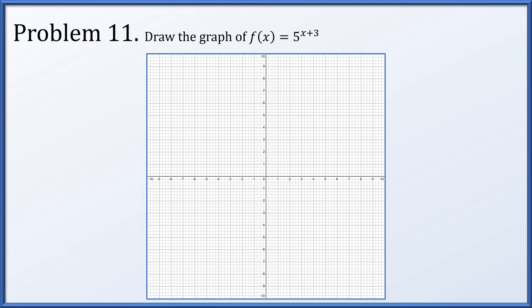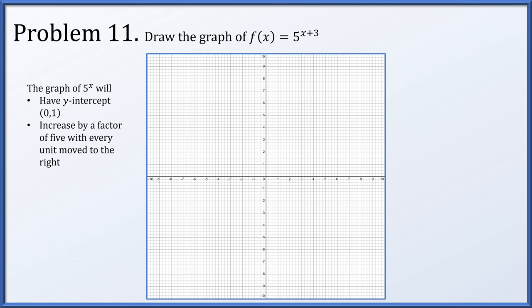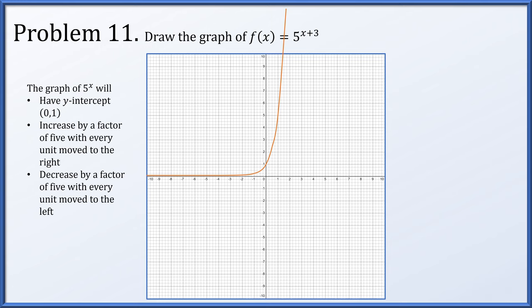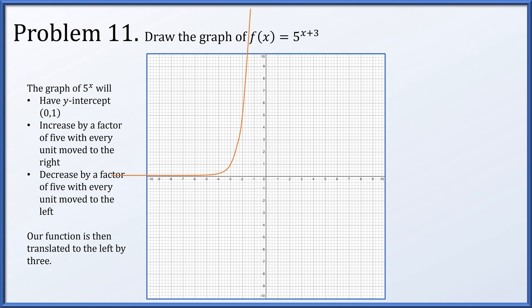Problem 11: draw the graph of f(x) = 5 to the (x+3). The graph of 5 to the x has intercept (0, 1), increases by a factor of 5 moving right, and decreases by a factor of 5 moving left. It goes through (1, 5) and reaches height 25 at x = 2, collapsing toward 0 as x decreases. Our function 5 to the (x+3) is this graph translated 3 units to the left.